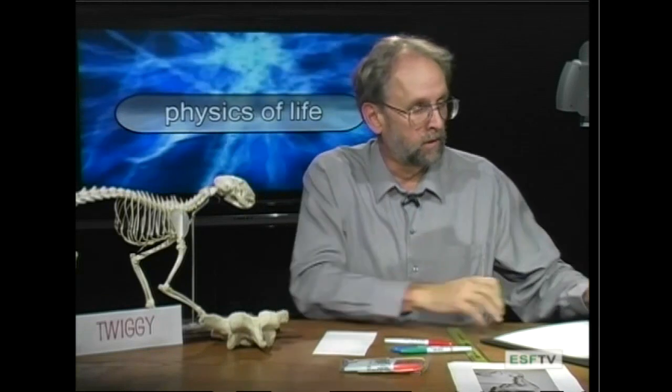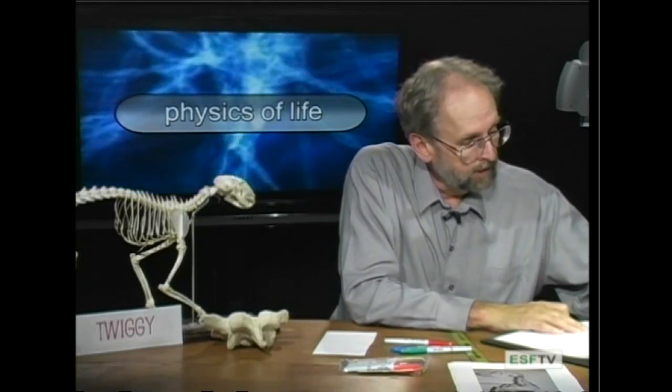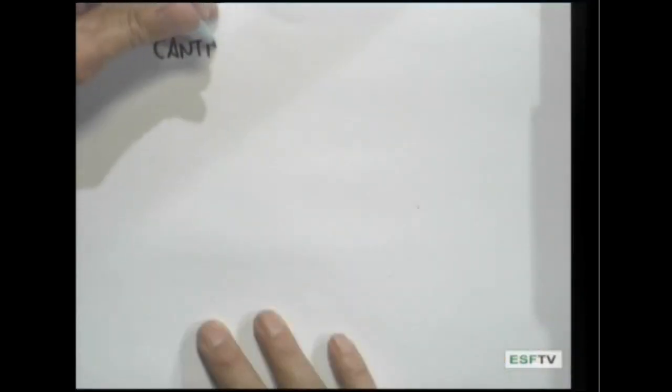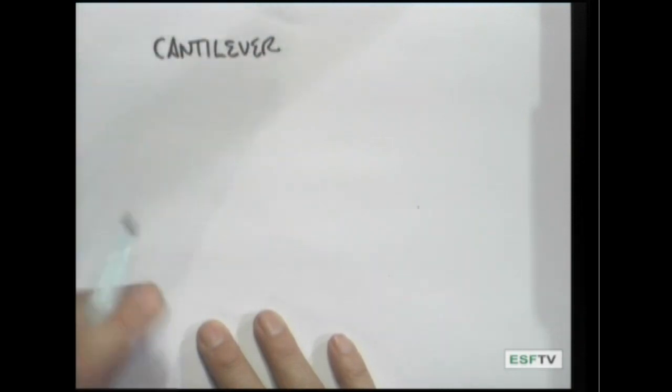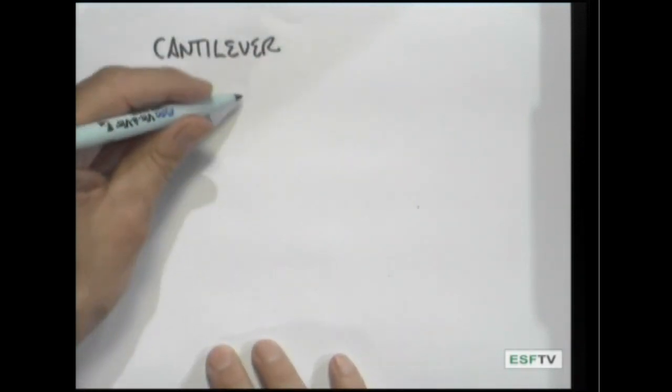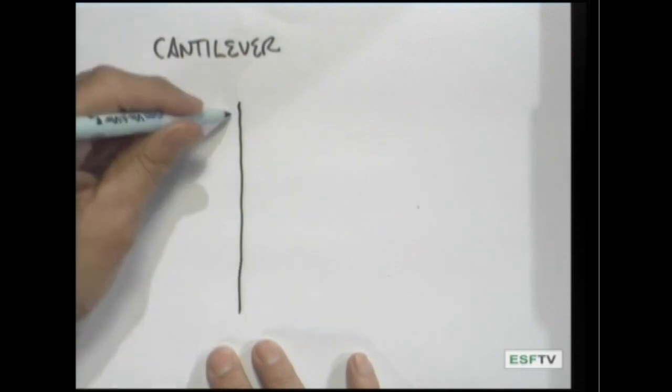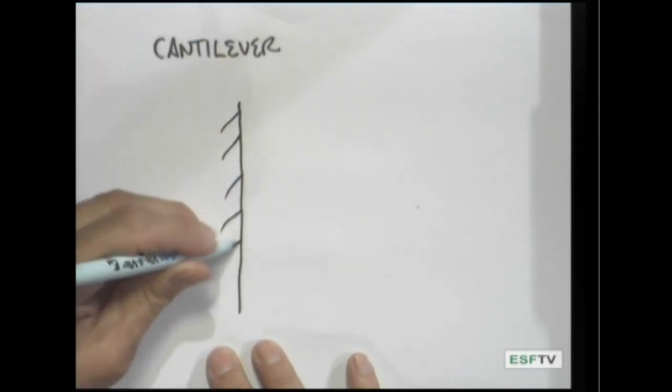So let's take a look at what a cantilever is. A cantilever is, here's the way it's spelled, and the simplest kind of cantilever comes from taking a wall, some kind of nice support structure over here, something that's nice and solid. So this is our wall right over there.